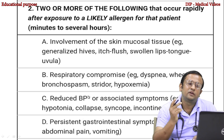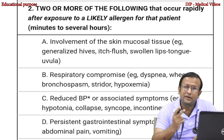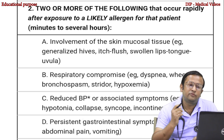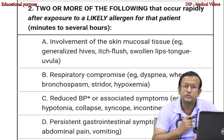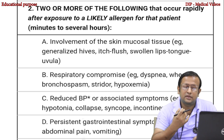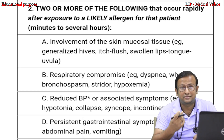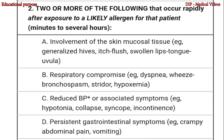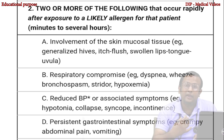Criterion two: two or more of the following that occur rapidly after exposure to a likely allergen for that patient — involvement of the skin or mucosal tissues such as generalized hives, itch, flushing, swollen lips, tongue, and uvula; respiratory compromise such as dyspnea, wheeze, bronchospasm, stridor, or hypoxemia; reduced blood pressure or associated symptoms such as hypotonia, collapse, syncope, or incontinence; or persistent gastrointestinal symptoms such as crampy abdominal pain and vomiting.